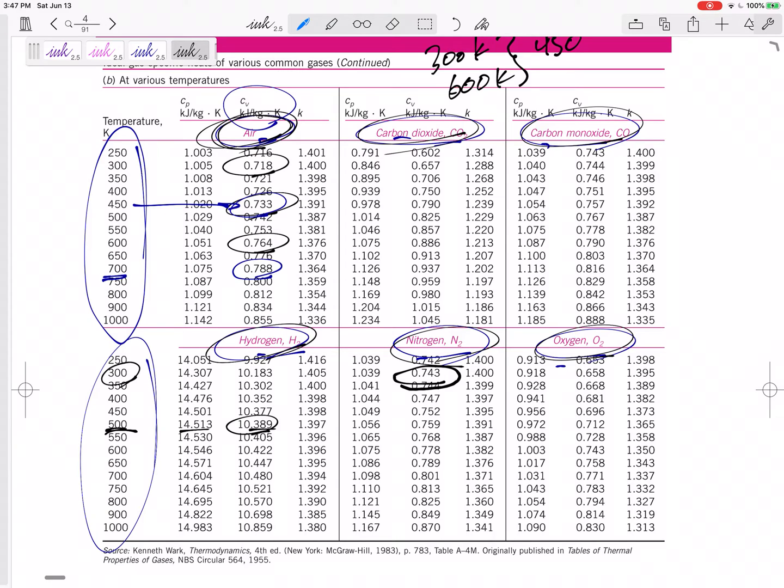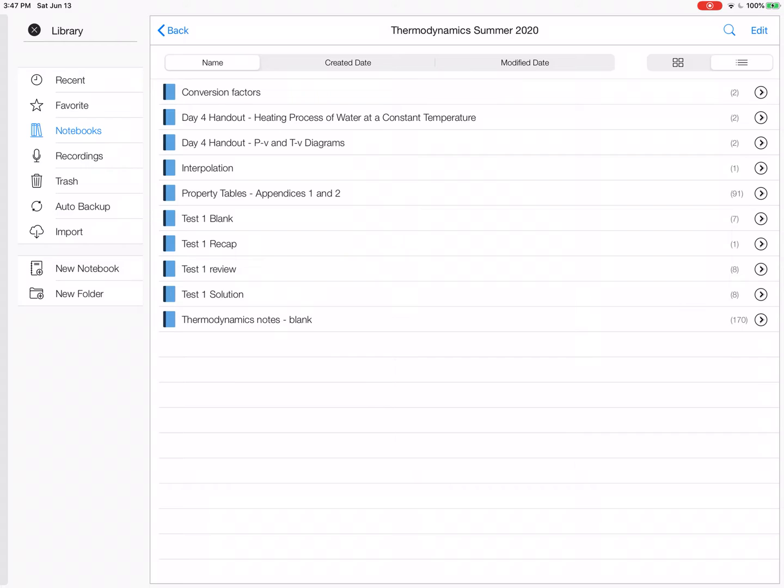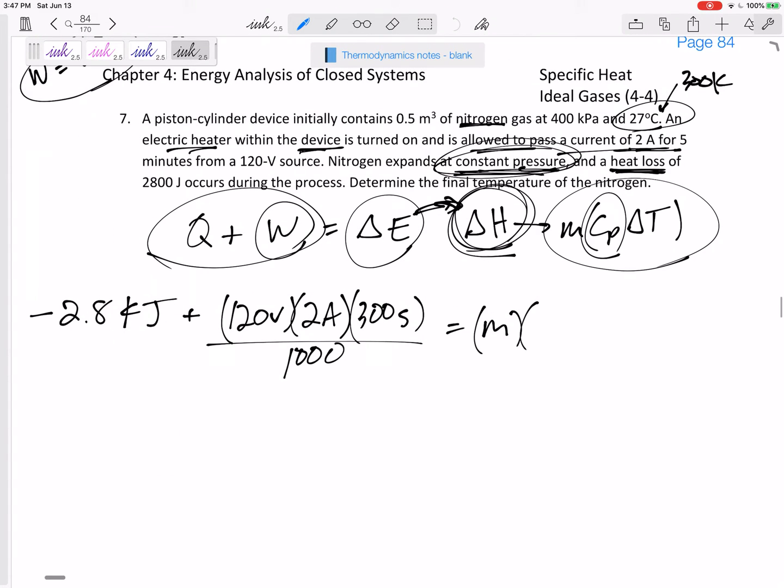Do I need cp or cv? This is a constant pressure process. I'm looking for delta H. I need cp. So I'm gonna use 1.039 - units are kilojoules per kilogram K.